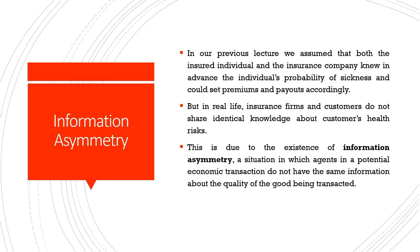Information asymmetry is a concept we have been introduced to right from the beginning of this course. In our previous lecture, we assumed that both the insured individual and the insurance company knew in advance the individual's probability of sickness and could set premiums and payouts accordingly. But in real life, insurance firms and customers do not share identical knowledge about customers' health risks, because of information asymmetry — a situation in which agents in a potential economic transaction do not have the same information about the quality of the good being transacted.